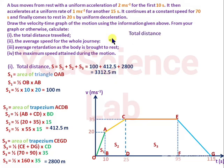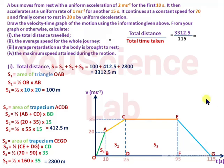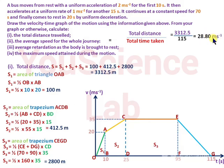Average speed equals total distance traveled divided by total time taken. That is 3312.5 divided by 115, which equals 28.80 meters per second.